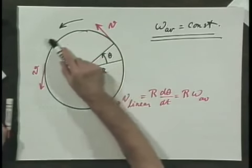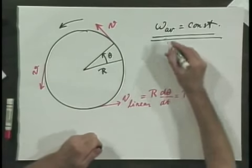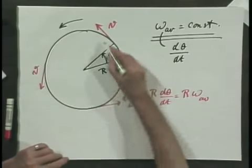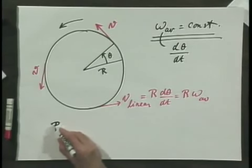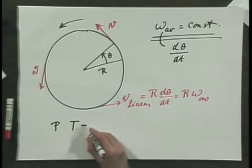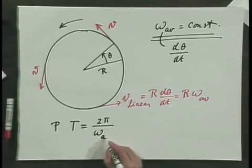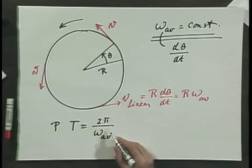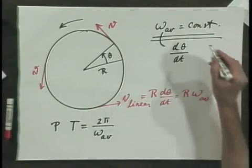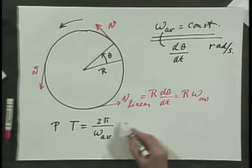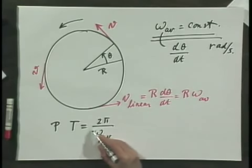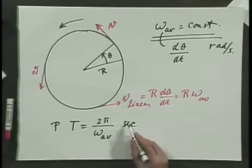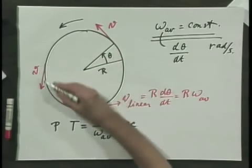The time for one complete rotation — and you may call that period P or T — equals 2π divided by the angular velocity. This is immediately obvious: one rotation is 2π radians, and the object moves with an angular velocity in radians per second, so to go 2π radians at omega radians per second takes exactly 2π/ω seconds.